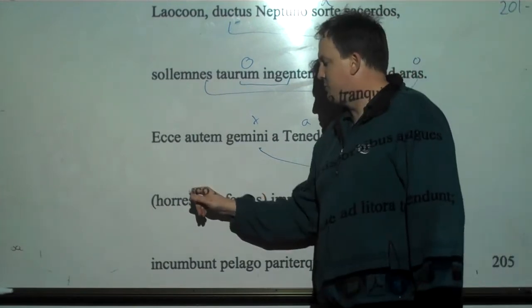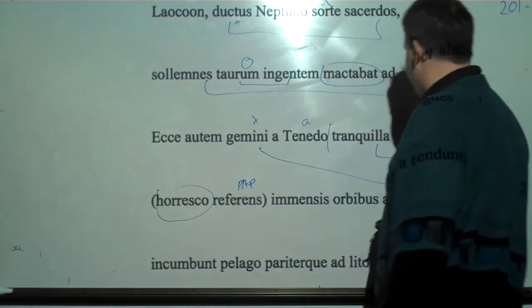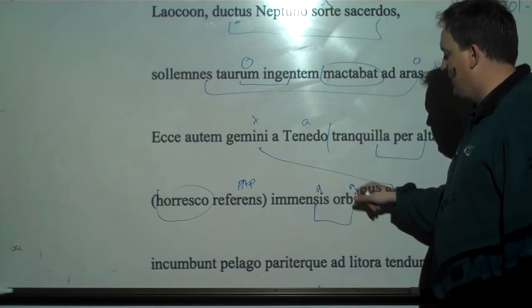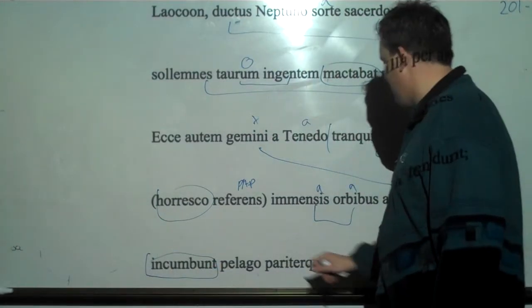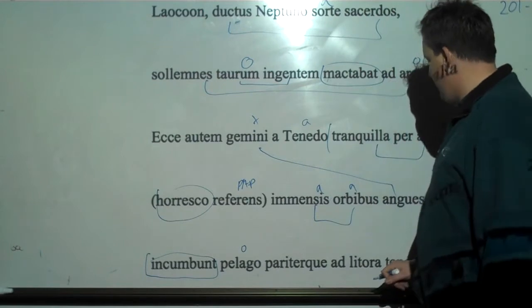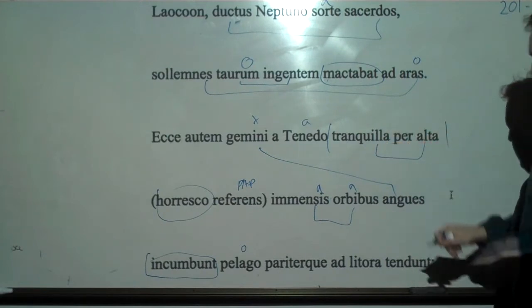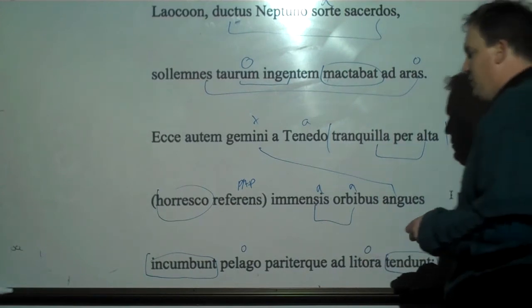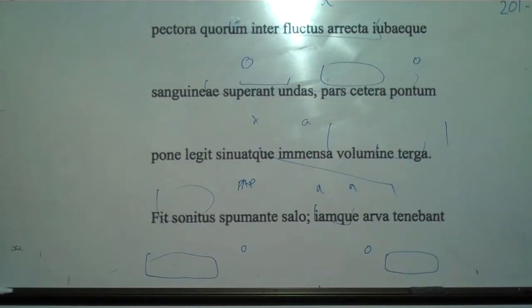And this is Aeneas speaking. Horresco. I shudder. Referens, recalling, reporting, telling. With immense coils, literally immense orbs. And then, so these twin snakes incumbunt, and we've seen this several times. Recline upon the sea. And pariter, equally, or side by side is another way to do it. There's two snakes and they're equally curring, or going, or stretching ad litora, to the shores. We have these twin snakes. The twin sea serpents are coming towards the shore and they're going to do something with Laocoon here.